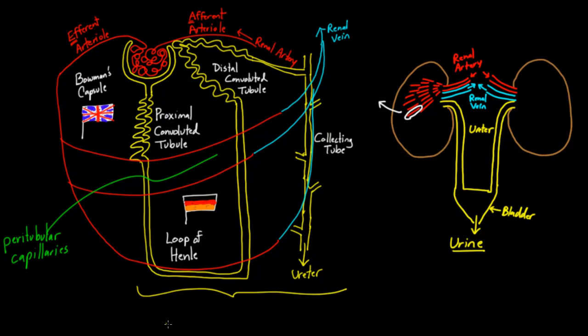And this important structure in yellow that I've drawn, this important structure in yellow has five parts to it. And all five parts coming together are called the nephron, the nephron. And so this is an important structure.